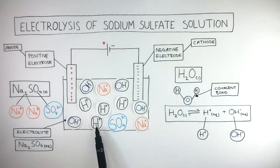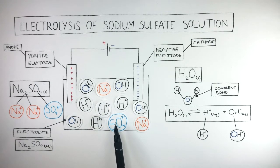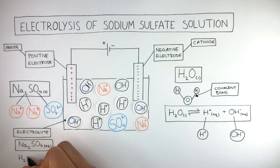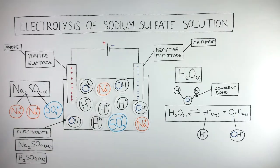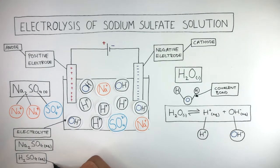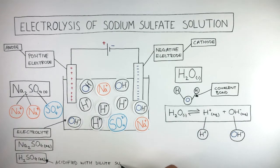As there are hydrogen ions and sulfate ions in solution, this means we can also write there is H2SO4 (aq) for aqueous. You may recognize H2SO4 — this is sulfuric acid. So we say this electrolyte has been acidified with a dilute acid.